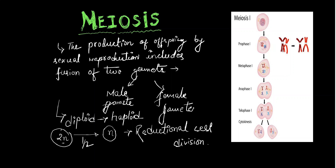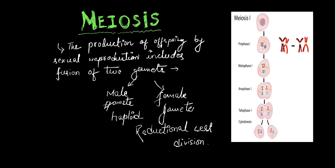Let's suppose we start with 46 chromosomes. We will have offspring with 23 chromosomes. So, apart from this, what we have in meiosis — we will discuss all of the phases.